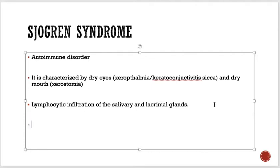It could be dry everywhere. Basically, the glands are infiltrated by lymphocytes. Antibodies form, circulate in the blood, travel to the different glands, cause inflammation, and those glands stop working. That's why they cannot produce any secretions.